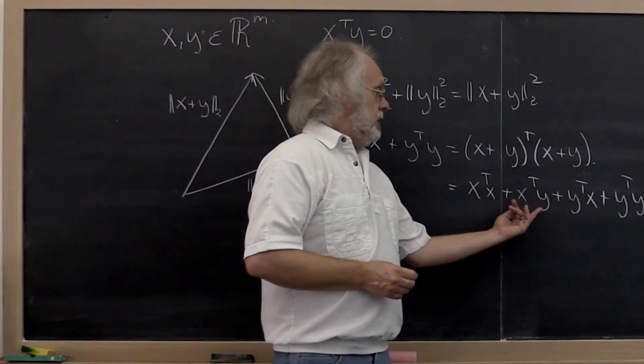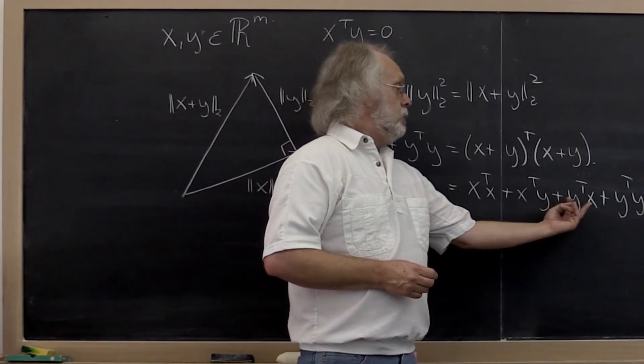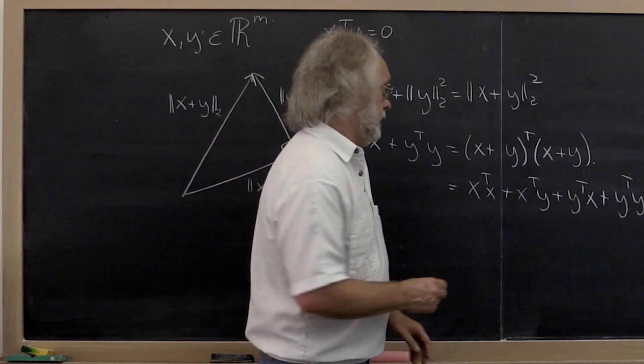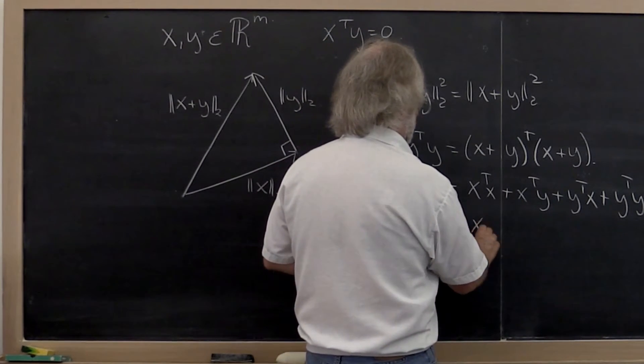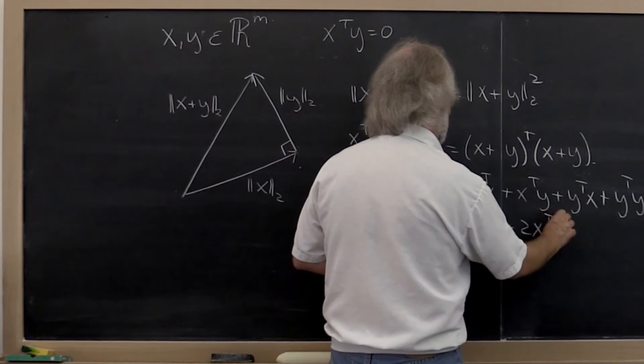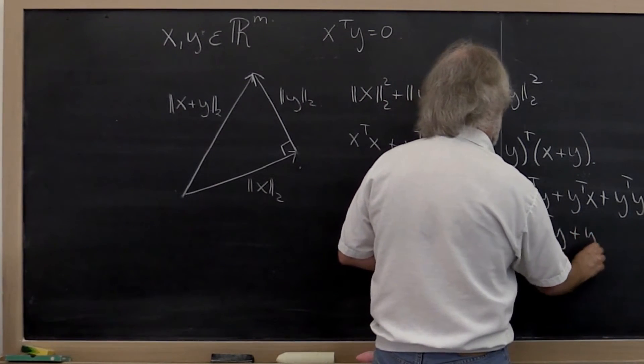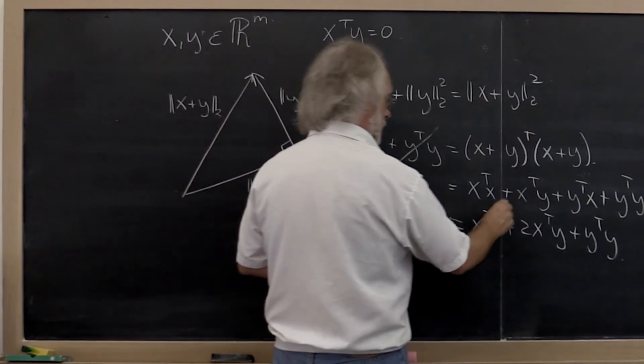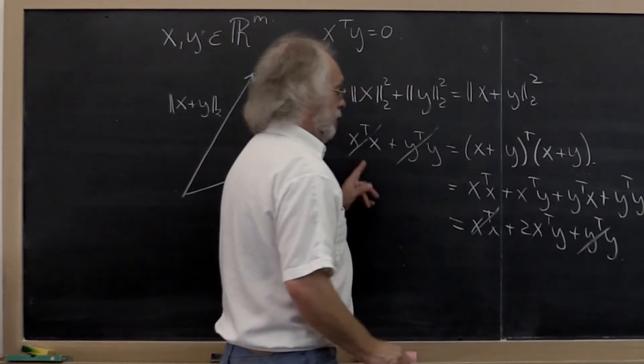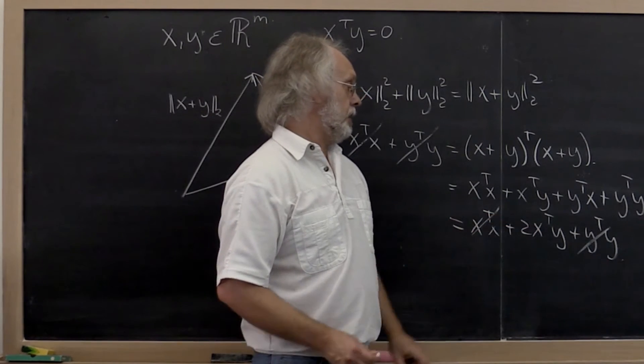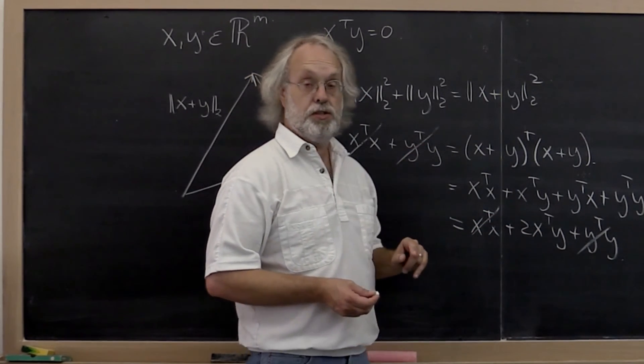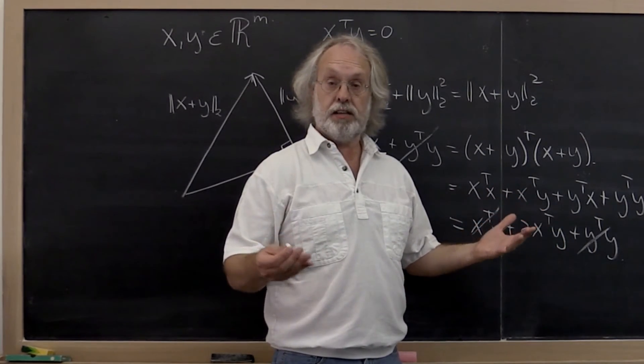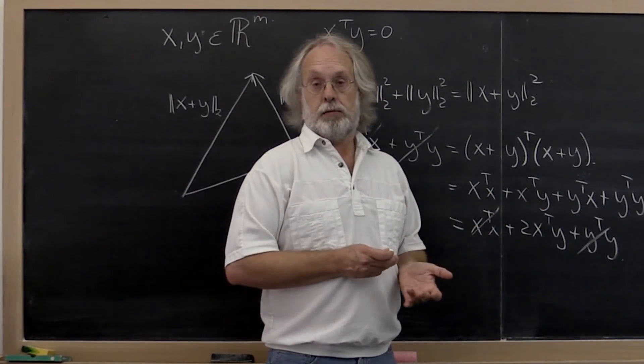But notice that x transpose y is equal to y transpose x if these vectors are real valued. And therefore this becomes x transpose x plus 2 times x transpose y plus y transpose y. And then you can cancel this and this against this and that. And you find that two times the dot product of x transpose y must be equal to zero. And therefore if x and y are not zero vectors, their dot product must be zero.